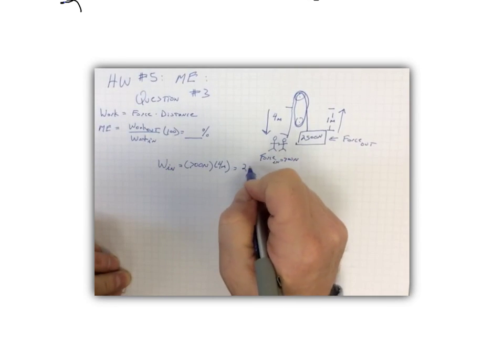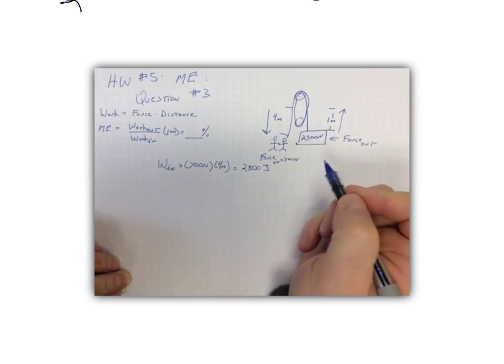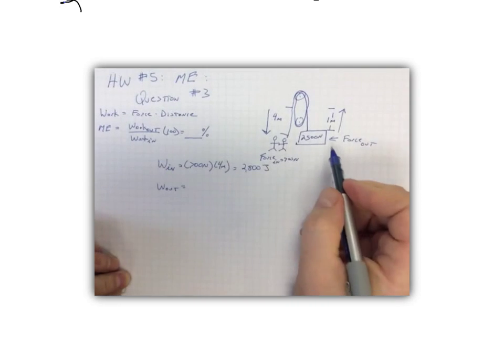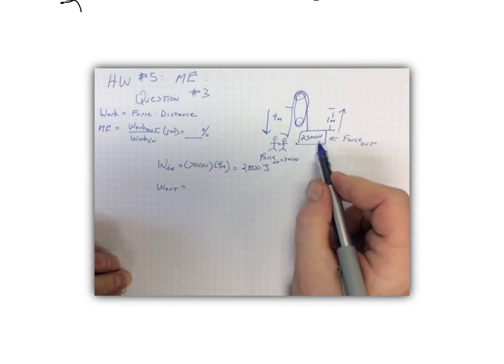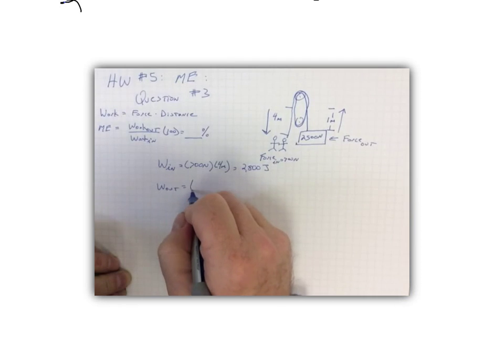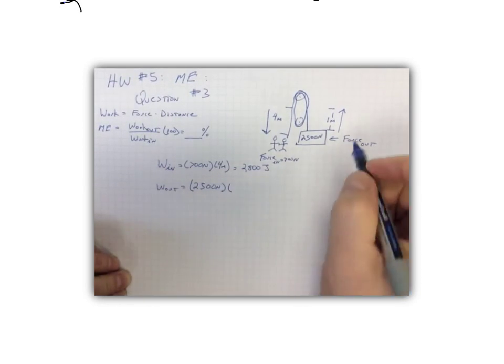Force out: we know that now, therefore by deduction, the weight of the object is the force we're going to overcome. So that's our force out. It's 2,500 newtons and we're going to lift it a distance of one meter.